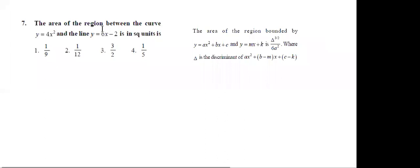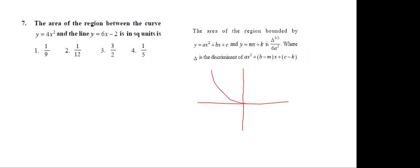The area of the region between the curves y = 4x² and the line y = 6x - 2, in square units. y = 4x² means x² = 4ay. I am drawing the diagram.